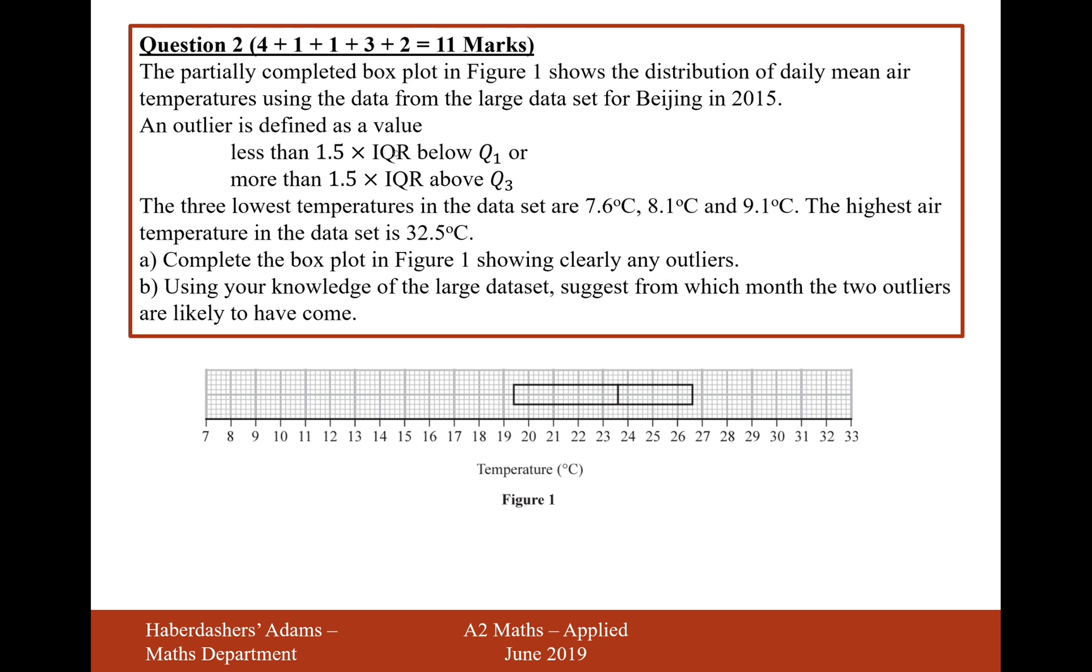So what we have to do first is work out the interquartile range and work out where the points are that we're going to stop our outliers. So the interquartile range goes from 19.4 up to 26.6.